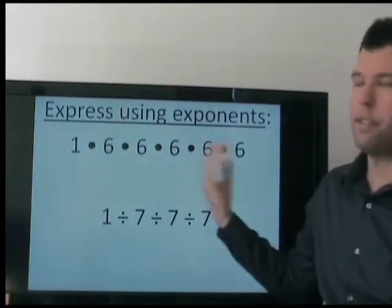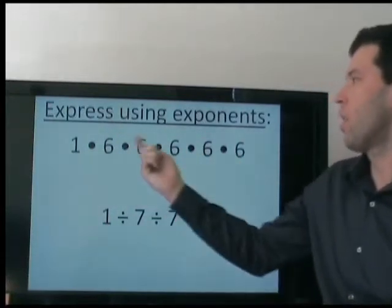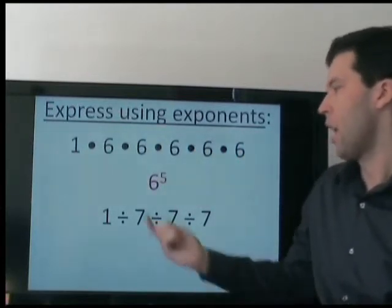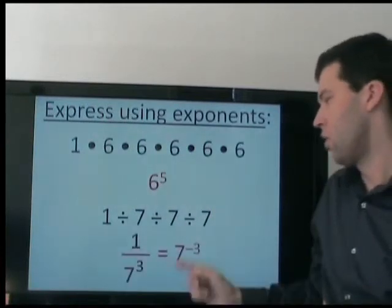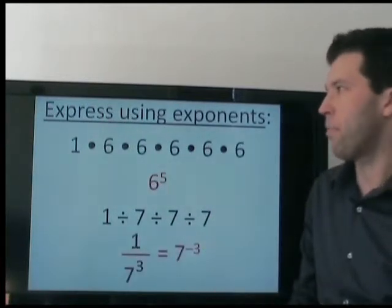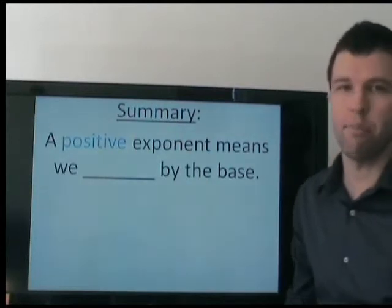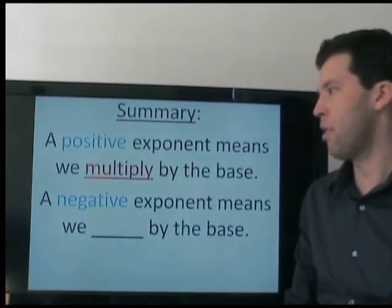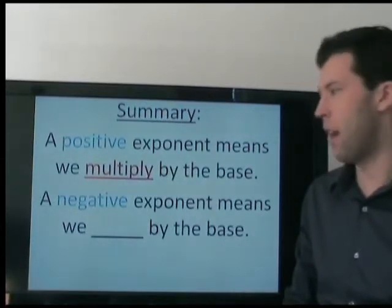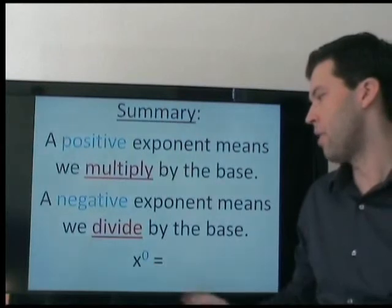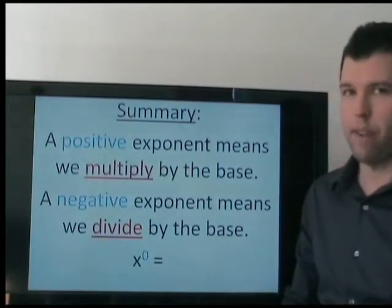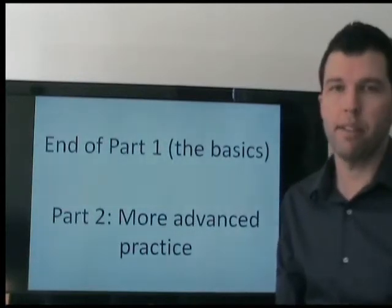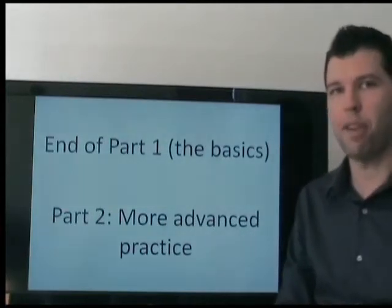How can we write this in a shorter way? We use exponents. Here, we are repeatedly multiplying, so that's a positive exponent. Here, we are dividing by 7 three times, so that's a negative exponent. In conclusion, very simply: a positive exponent means we multiply, a negative exponent means we do the opposite — we divide, and an exponent of 0 means we neither multiply nor divide; it's just 1. That's the end of Part 1, the very basics. Keep watching for more advanced practice.